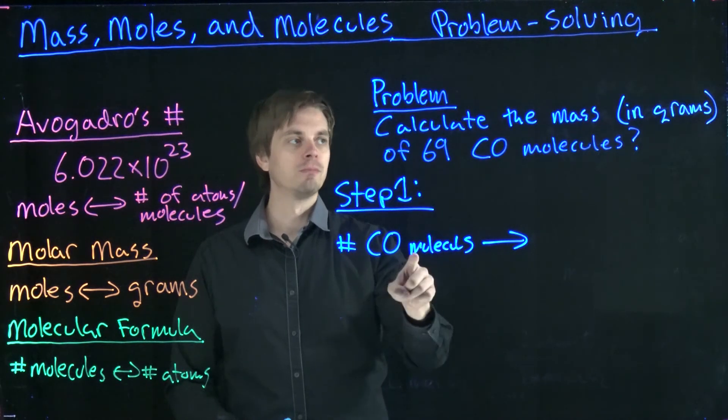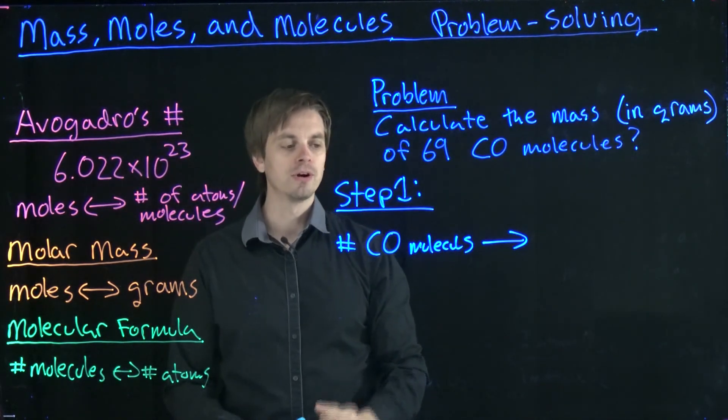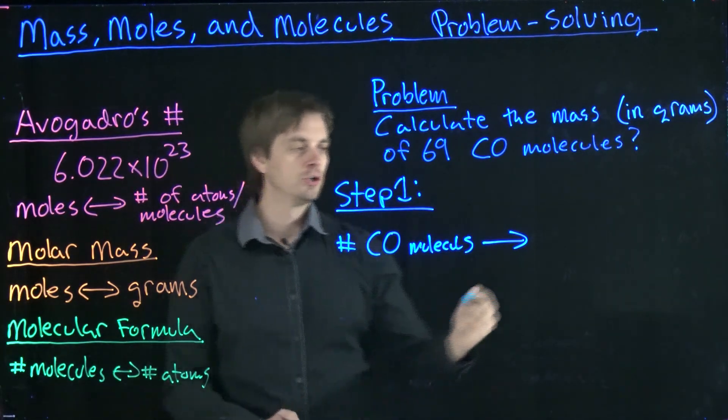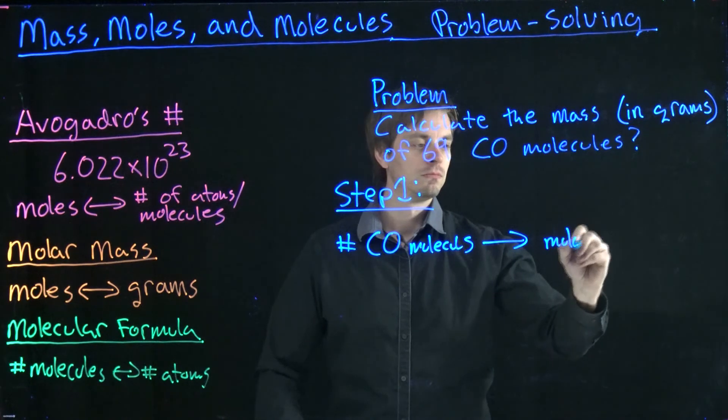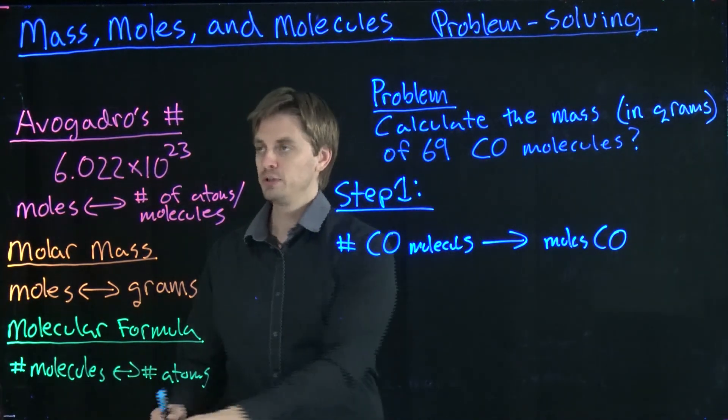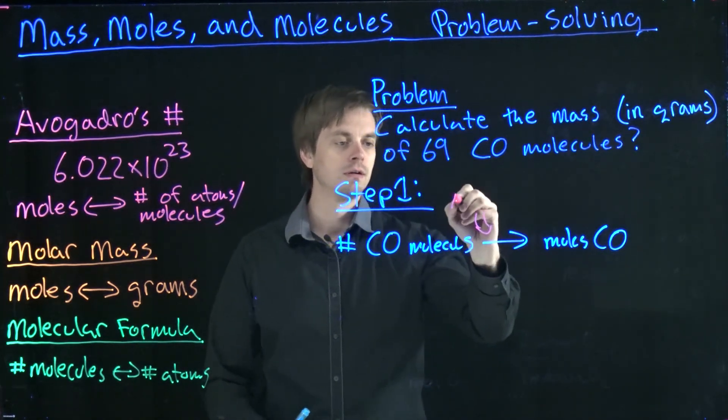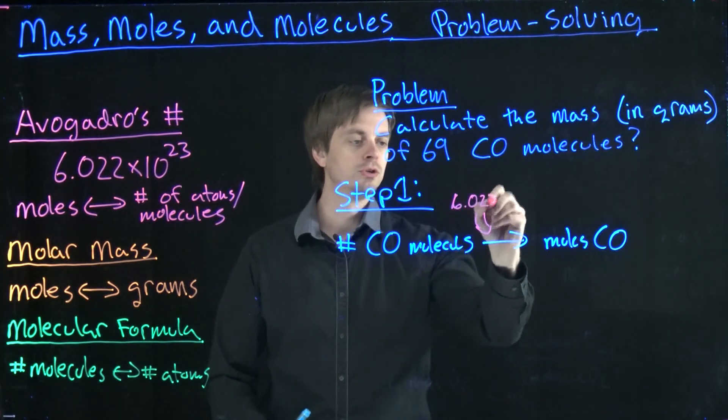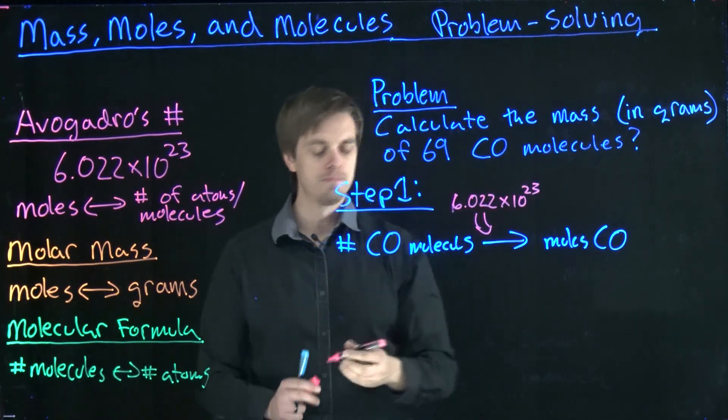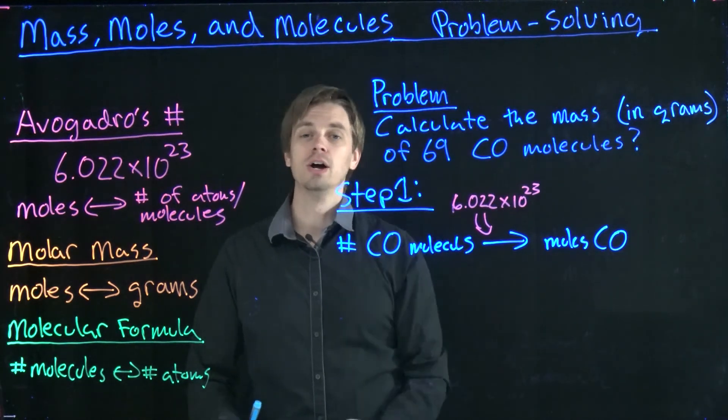So if we're starting off with number of molecules, we do have a conversion factor, namely Avogadro's number, that allows us to convert from numbers of CO molecules to moles. So we've got moles of CO. And we can use Avogadro's number, 6.022 times 10 to the 23rd. So we've got Avogadro's number here. That will get us to moles of CO.